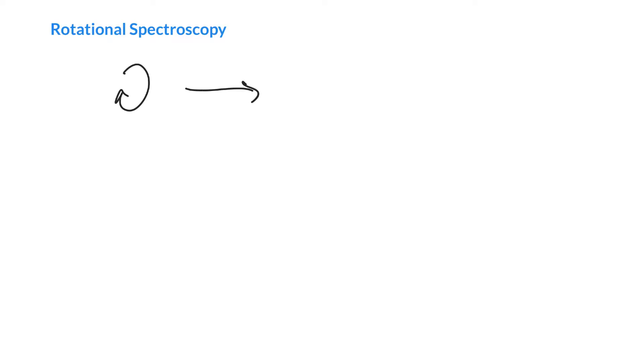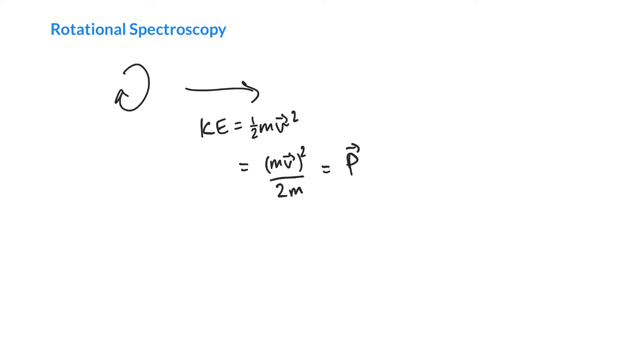Hey everyone, welcome to the first lecture on rotational spectroscopy. When we finished off last week, we talked about the rotational world versus the linear world. We know a bunch of equations in the linear world. For instance, we know that kinetic energy of an object is one half the mass times the square of the velocity. We can also rewrite that as the mass times the velocity all squared over 2m, and we recognize that the top term is the linear momentum in a particular direction, squared, all over 2m.